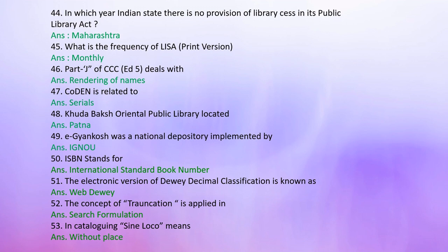Question 46: Part J of CCC Edition 5 deals with — Answer: Rendering of names. Question 47: WHODAS is related to — Answer: Serials. Question 49: E-Granthalaya was a national depository implemented by NIC. Question 50: ISBN stands for — Answer: International Standard Book Number. Question 51: The electronic version of Dewey Decimal Classification is known as WebDewey. Question 52: The concept of truncation is applied in — Answer: Search formulation.